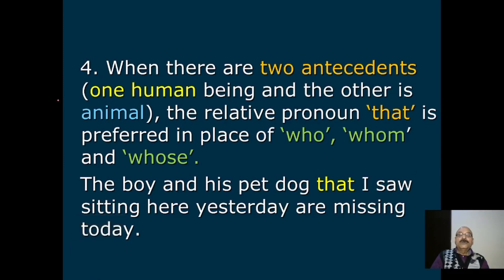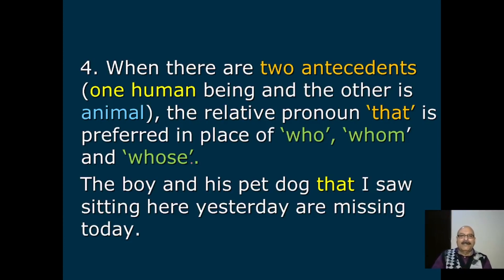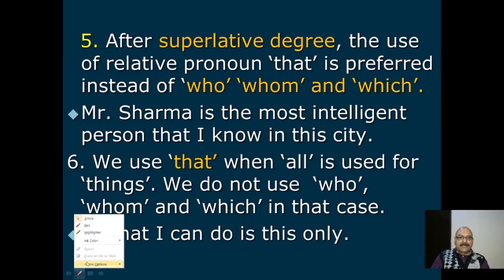Fourth rule: جب دو antecedents ہوں — ایک human being اور دوسرا animal — تو 'that' preferable ہے 'who/whom/whose' کی جگہ۔ Example: 'The boy and his pet dog that I saw sitting here yesterday are missing today.' یہاں boy human being ہے اور pet dog animal ہے، اس لیے 'that' preferred ہے۔